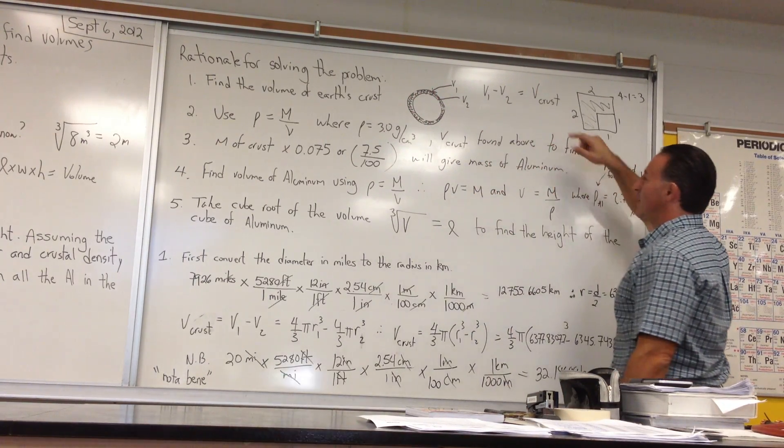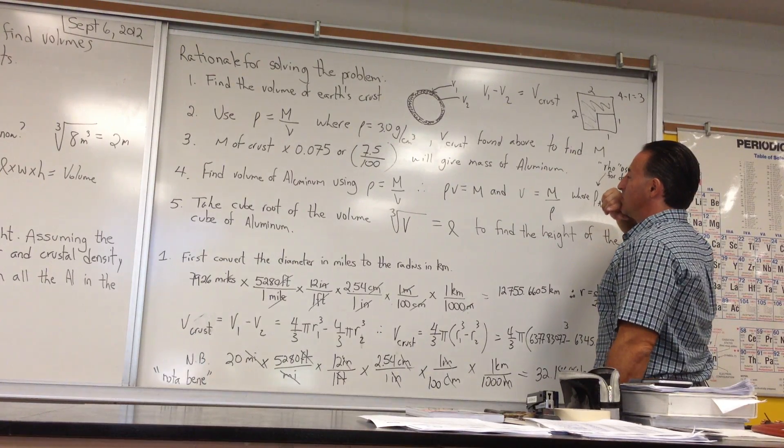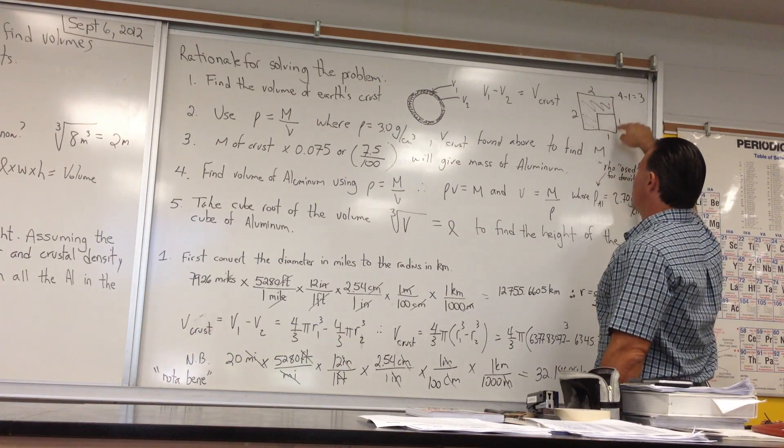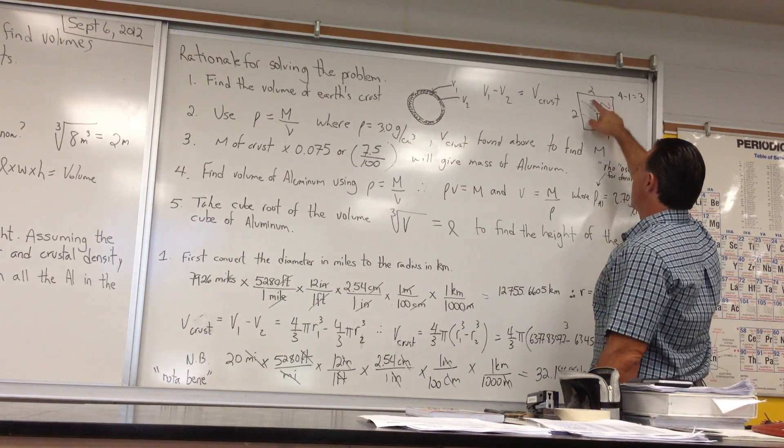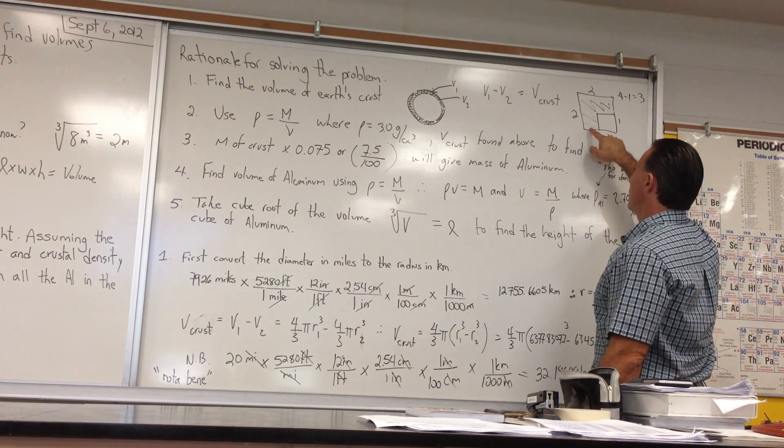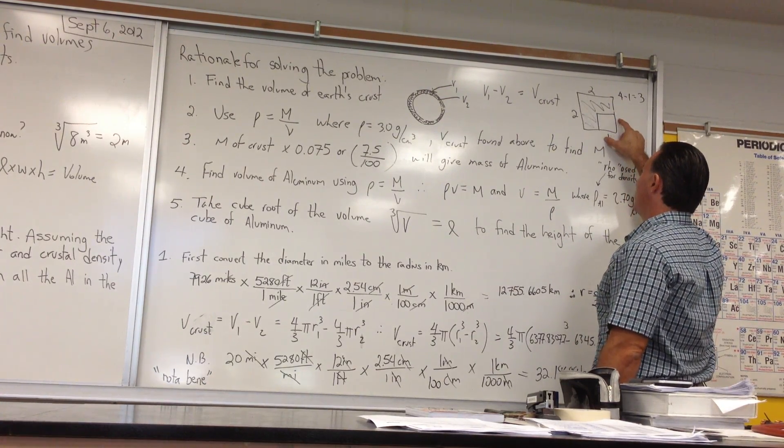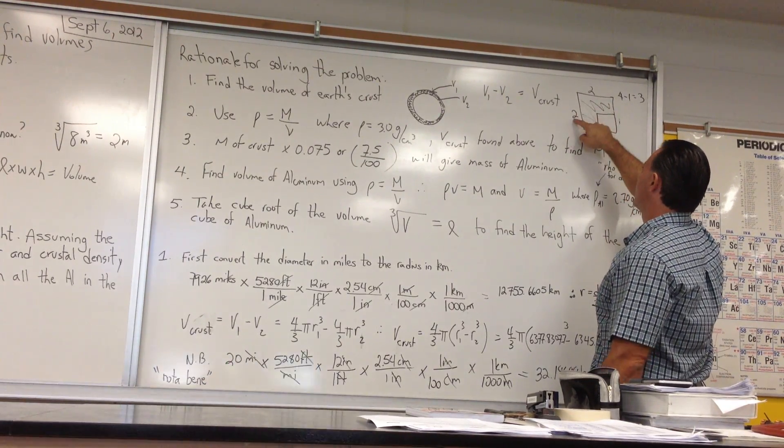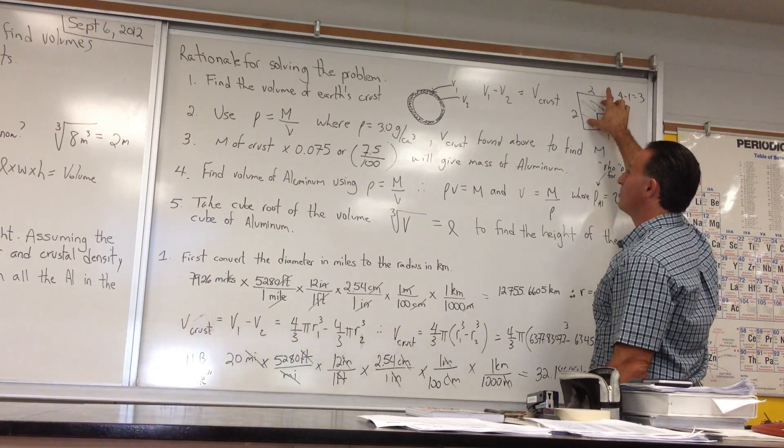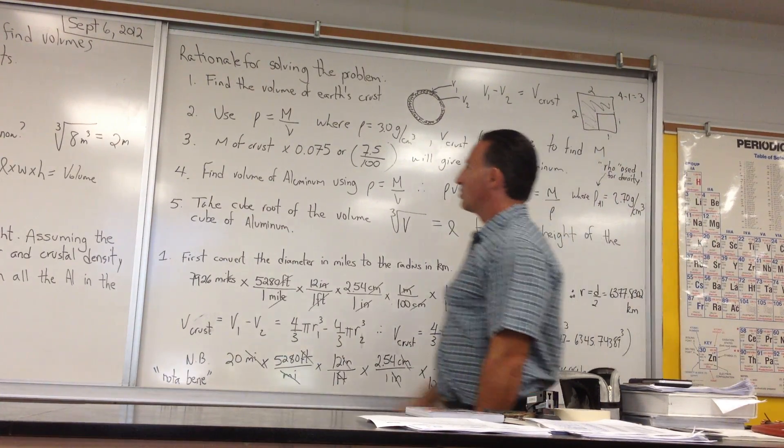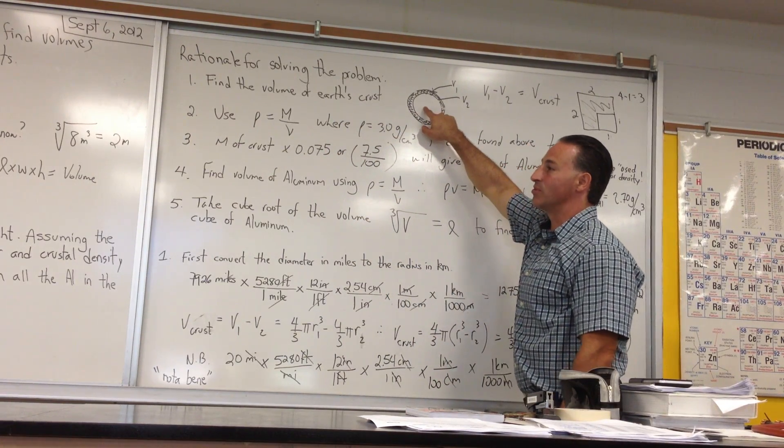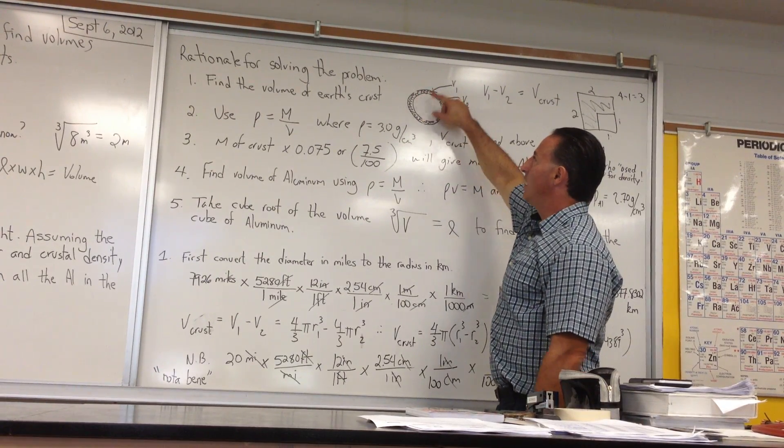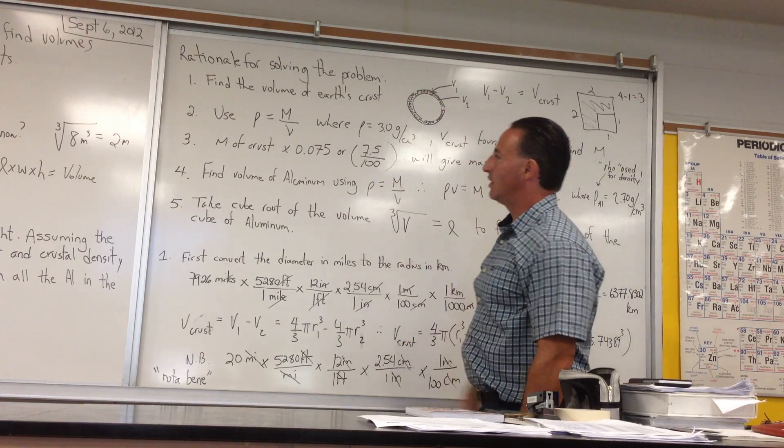You sometimes see the same strategy used in textbooks to find the area of an odd-shaped figure. For example, I have a square here with a square cutout, and to find the volume of that part of the square, the square is 2 by 2 and the cutout is 1 by 1, so the area of the shaded part is 4 minus 1. We're doing the same thing except with volumes. We're finding the volume of the outer sphere, the volume of the inner sphere, and by difference, we're finding the volume of the crust.